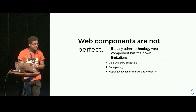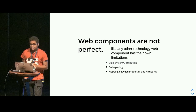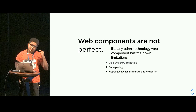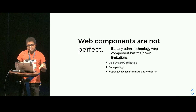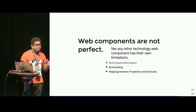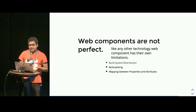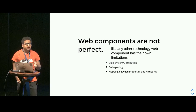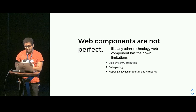Like every other technology on the web, web components are also not perfect. There are things you have to do manually. There's a lot of boilerplating — when you create your hello world component you'll see there's a lot of things to write initially. And mapping between properties and attributes is something you need to make sure you do; otherwise you'll be setting an attribute but not getting any property, so you have to have a proper setter for that.